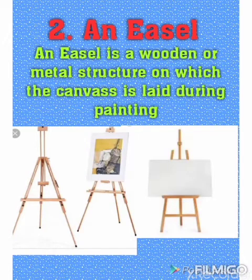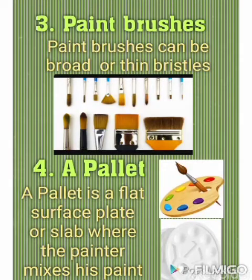The canvas is laid on an easel. An easel is a wooden or metal structure on which the canvas is placed during painting. This structure can be dismantled and mounted elsewhere — perhaps in a garden, by a riverbank, or by a lake. The artist simply mounts the easel, puts the canvas on it, and begins to paint.